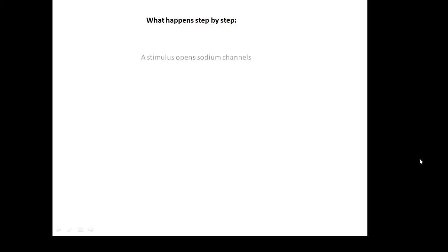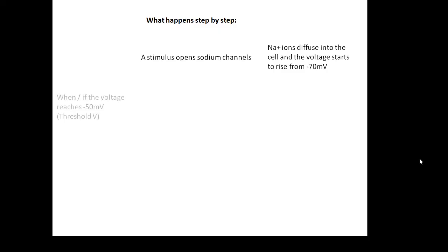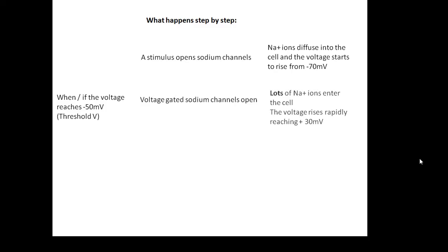What happens step by step? A stimulus comes along and opens the sodium channels. The sodium ions diffuse into the cell and the voltage starts to rise from minus 70, which was the resting potential. If or when the voltage reaches minus 50 — which is called the threshold voltage — then the voltage-gated sodium channels open and you get lots and lots of sodium ions entering the cell, and the voltage rises rapidly up to plus 30 millivolts.